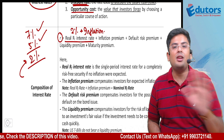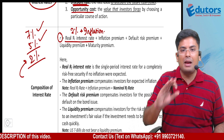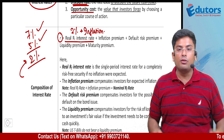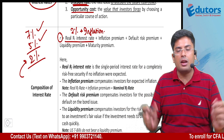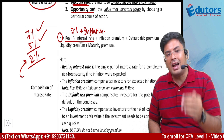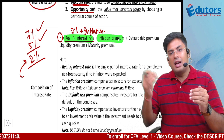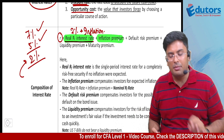However, we don't operate on real rates in practice. Whenever we discuss any interest rate, it is always nominal in nature. When you discuss an FD at the bank, nobody breaks it down saying '5% is inflation and 2% is extra.' Everyone simply says you'll get 7%. So as soon as I add the inflation premium to the real risk-free rate, it becomes the nominal risk-free rate.